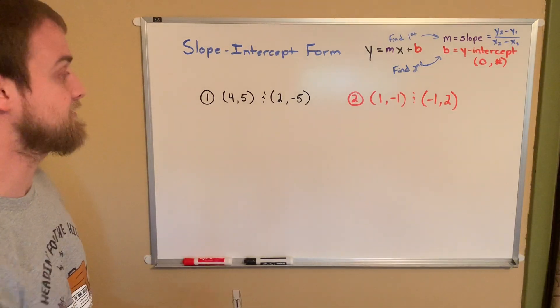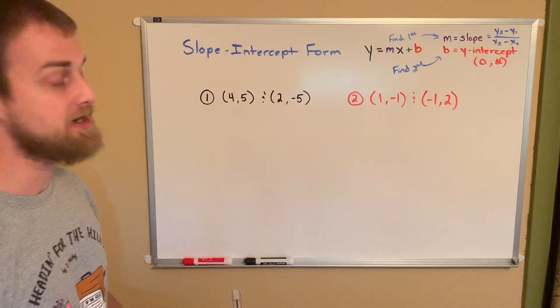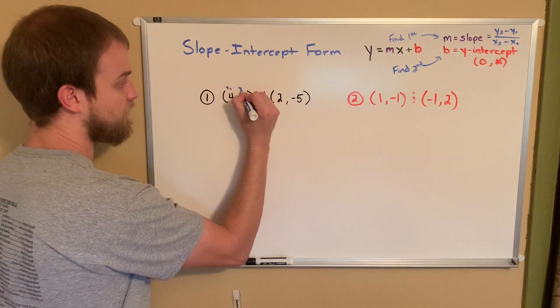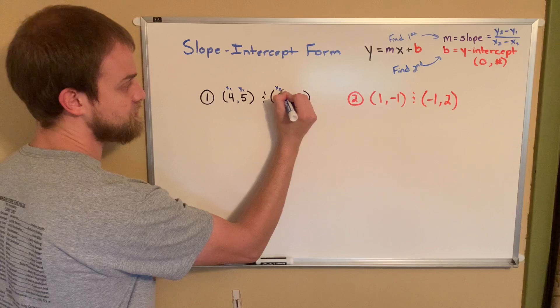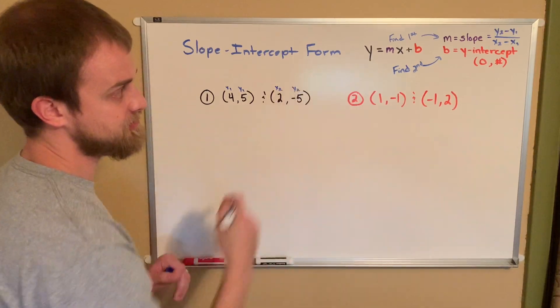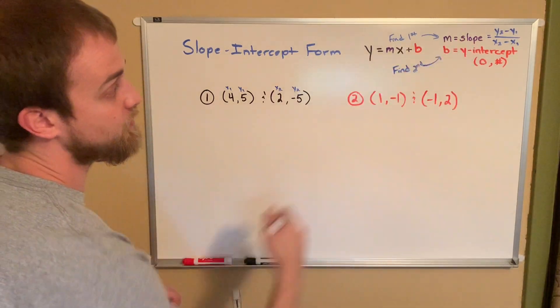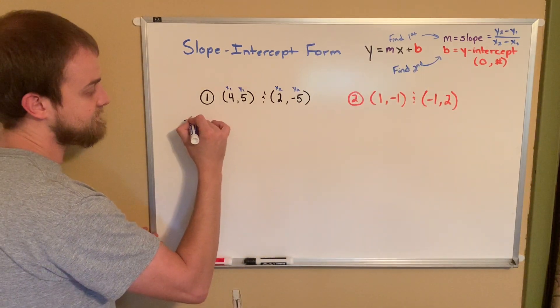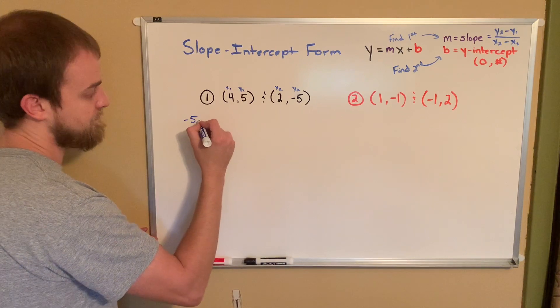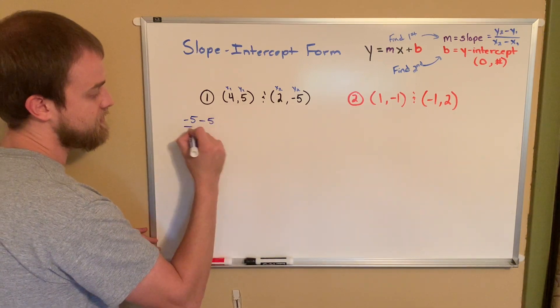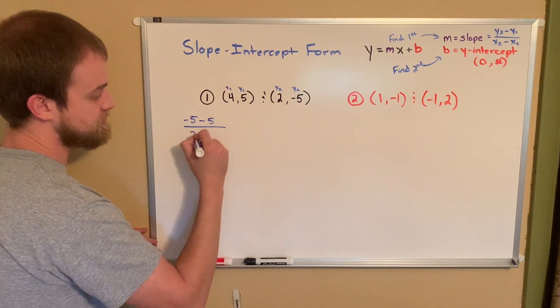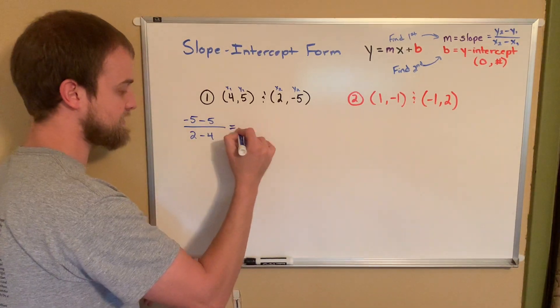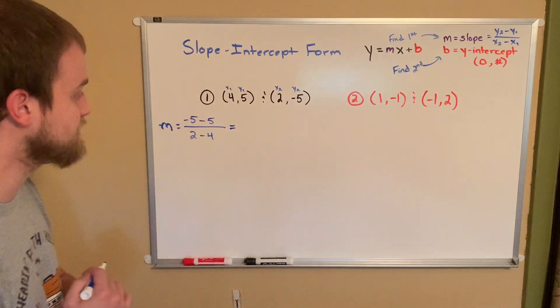Also, we'll find the y-intercept second. So let's get started here. Here's my two ordered pairs. Let's find the slope. Remember, it's x₁, y₁, x₂, y₂. And we're going to use our slope formula y₂ minus y₁ over x₂ minus x₁.